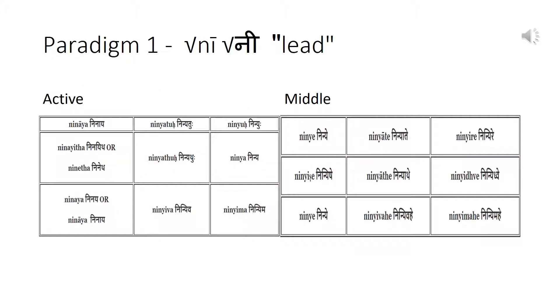Let us take the root 'ni' (lead) as an example of a conjugation of a root ending in vowels of e or o type. The strong stem is 'ninai' and the weak stem is 'ninī'.